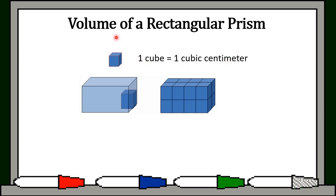To visualize the volume of this rectangular prism, 1 cube equals 1 cubic centimeter. We place cubes inside the rectangular prism until it is filled. To get the volume, bibilangin mo lahat ng inilagay mong cubes sa loob ng ating rectangular prism. Let us count — we have 8 cubes in front, and 8 din dun sa likuran niya, so 8 plus 8 equals 16.